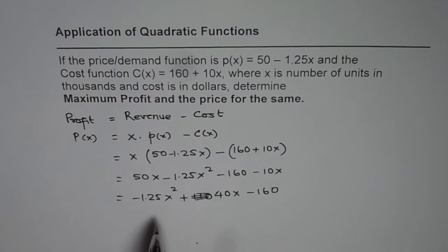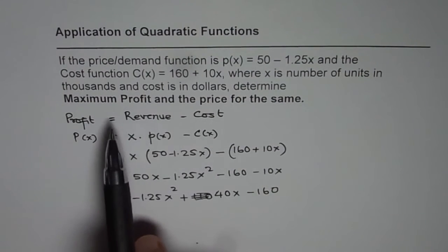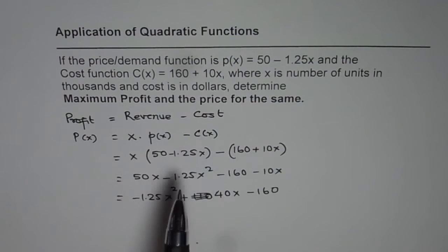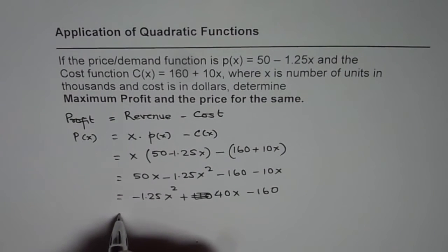What we can do here is, we can actually factor or we can do completing the squares. Since we need maximum profit and the price for the item, completing the squares is probably the best method to do. So let's complete the squares.